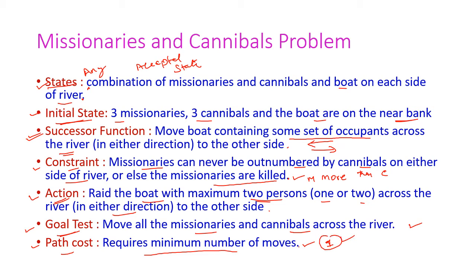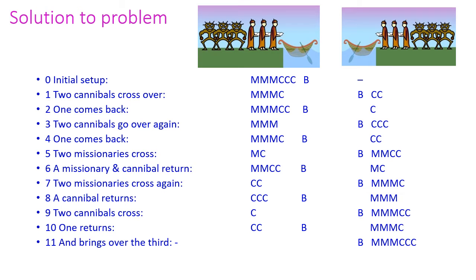We have to find the minimum number of moves to cross all the missionaries and cannibals to the other side of the river. This is the solution to our problem. Initially on one side of the bank there are three missionaries and three cannibals, and our final state is when both the boat and all missionaries and cannibals have reached the other side.